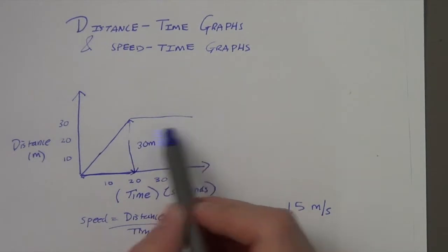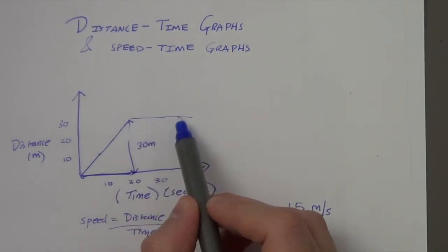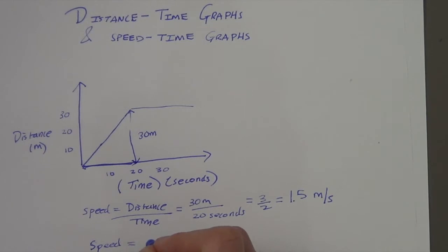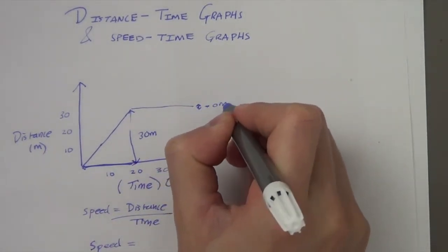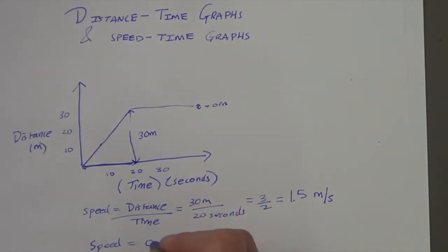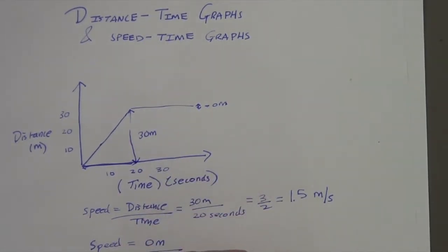What is the speed from 20 seconds onwards? We can see from the graph that the object is just staying at 30 metres. If we put in the numbers, the distance is 0 metres — it's not moving forwards or backwards. So in the next 10 seconds, from 20 to 30, we still get 0 metres per second. The speed is 0 metres per second.